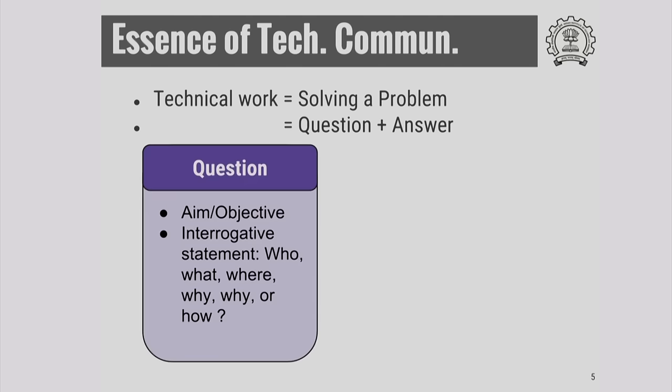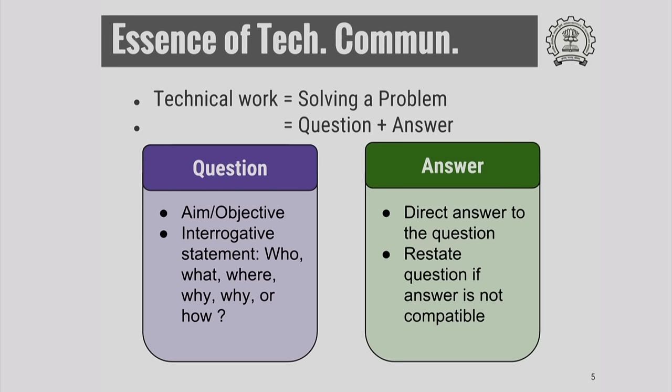What is a question? Some people call it aim or objective. A question is a clearly defined interrogative statement, which means you need to have something like who, what, where, when, why, or how. You would have noticed such sentences described in your textbooks. So, if you are able to state the problem you are solving in terms of a precisely defined question, then you have got one portion covered. Then comes the answer. The answer must be a direct answer to this question — a statement which exactly answers what you have raised in the interrogative statement.